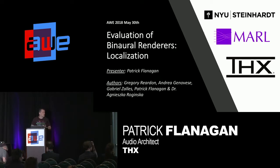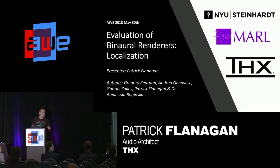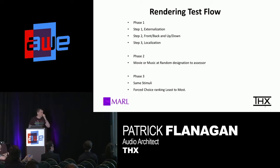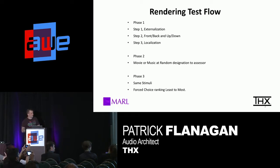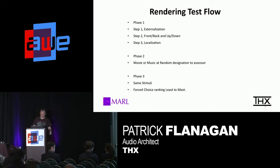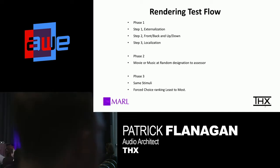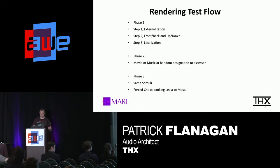So what I'm going to talk about is a year-long study we did with NYU, with MARL — it's a music and audio research lab. So this is the rendering methodology. The test flow is three phases. Phase one: externalization, front, back, up, down, and then localization behavior. Phase two, we were looking at attribute tests, like quality assessment. We had movie or music, and it was a random designation to the assessor. And then phase three was a forced choice to choose least to most preferred.